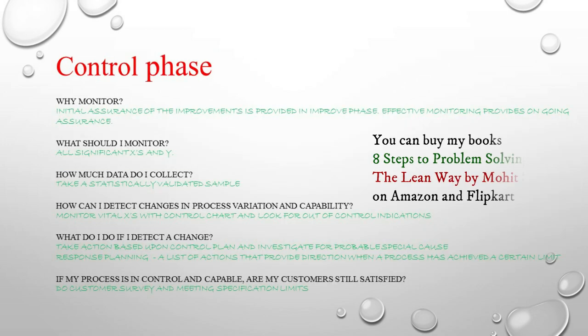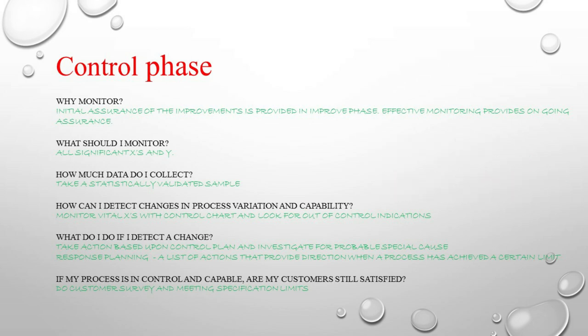In the control phase we should ask some key questions. The first question is: why should we monitor? We have already improved the process — why monitor it now? It is important to effectively monitor so that we can provide assurance that the process has improved and will not go back to the problem state again. We need to monitor the process until the new improvements become part of the process.